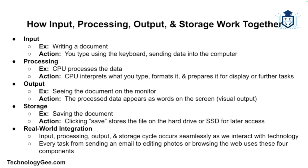Now that we've covered input, processing, output, and storage, let's bring everything together with an example. Imagine you're writing a document. First, input — you use the keyboard to type, sending data into the computer. Then processing — the CPU processes that data, understanding what you're typing, formatting it, and preparing it for output. Output — the words you've typed appear on the monitor as visual output. And finally, storage — when you click save, the document is stored on the hard drive or SSD, allowing you to retrieve it later.